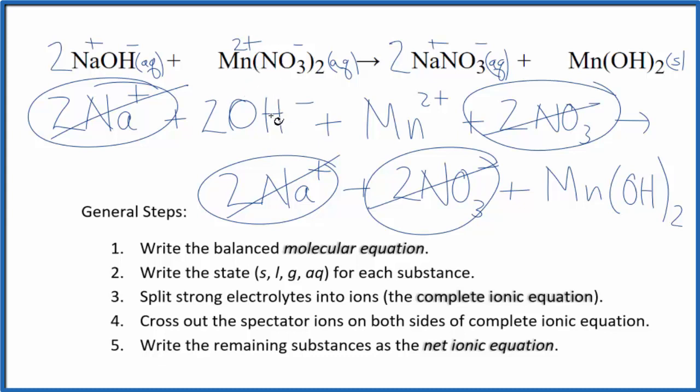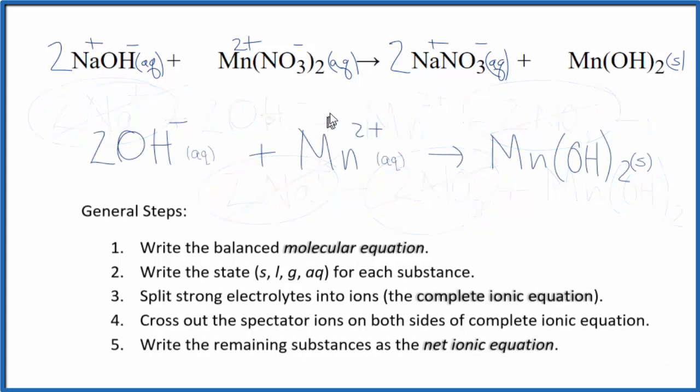I'll clean it up, write the states in. We'll have our net ionic equation. So this is the balanced net ionic equation for this NaOH plus Mn(NO3)2.